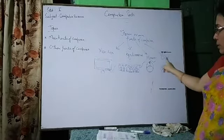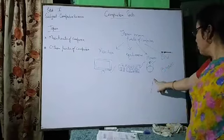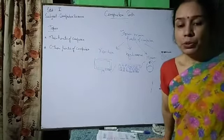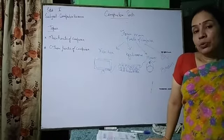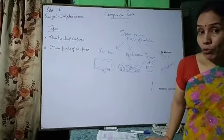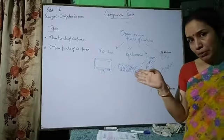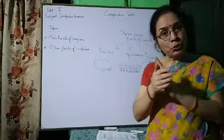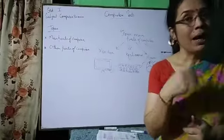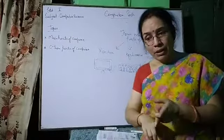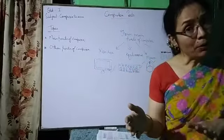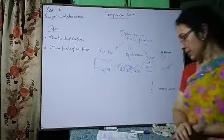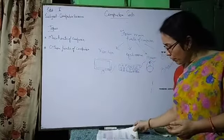Understood these four main parts? Monitor, keyboard, mouse, and CPU. Whenever I ask you the main parts' names, immediately you have to answer all four parts: monitor, keyboard, mouse, and CPU. Which computer part shows us the work done on the computer? Answer: monitor. Which computer part helps us to do typing on the computer? Answer: keyboard. So these are the four main parts of the computer.